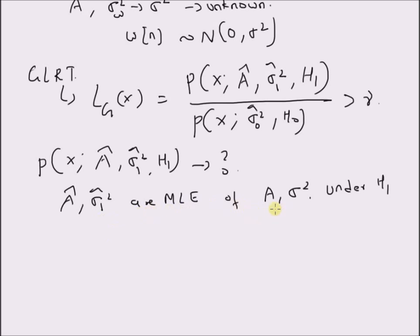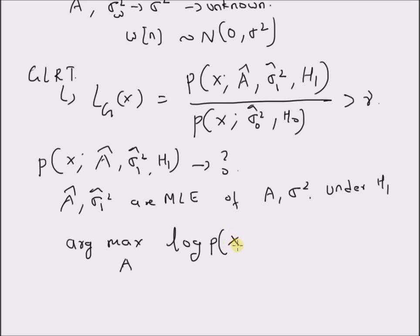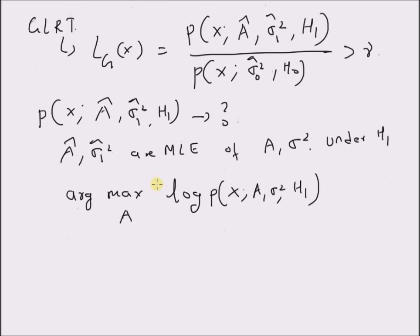We can construct the maximum likelihood estimates of these parameters by maximizing the likelihood probability distribution. That is, we take the argument that maximizes, over the unknown parameters A and sigma squared, the logarithm of the probability distribution of x under the alternate hypothesis H1. By maximizing this function, we can estimate the unknown values A and sigma squared.